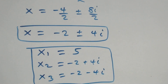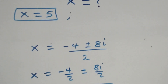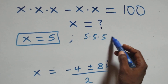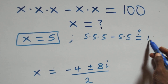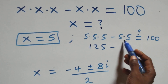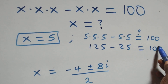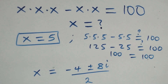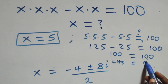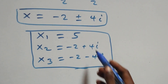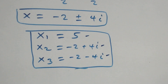We can verify by substituting x equals to 5: 5 times 5 times 5 minus 5 times 5 equals 125 minus 25, which equals 100. Left-hand side equals right-hand side, so x equals to 5 satisfies the given problem. In the same way, the two complex solutions also satisfy the equation.